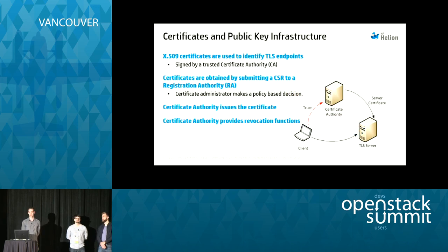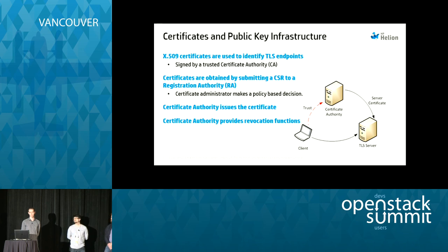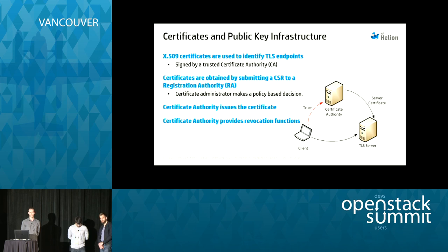Most TLS deployments use X.509 certificates to identify the TLS endpoints. Typically you use certificates on the server, but in some cases on the client as well. Certificates are obtained by submitting a CSR to a registration authority, which handles decision-making, and the certificate authority handles the actual signing. A server owner submits a CSR to the RA, and the certificate administrator checks the fields against policy — if they match, the certificate is issued.